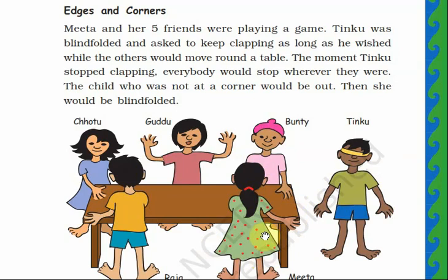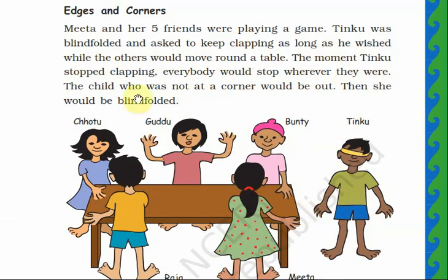In this game there is no music. One child is blindfolded and keeps on clapping. Once he stops clapping, the other children stop moving round the table — they have to suddenly stop and not move from the place where they were. The moment Tingu stopped clapping, everybody would stop wherever they were. The child who was not at a corner would be out; then she would be blindfolded.